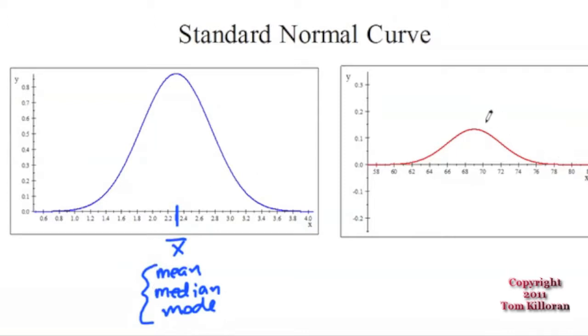This is another graph of normalized data, and this would be something like men's heights. So this would be the average men's height, about 69 inches,